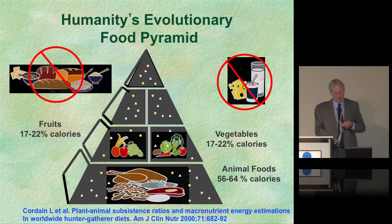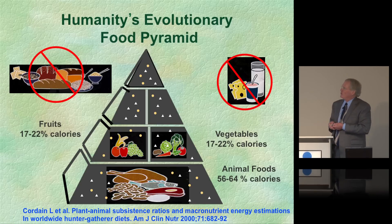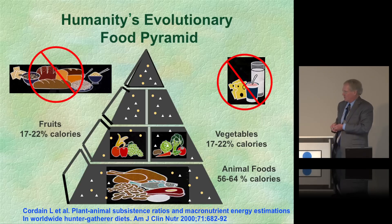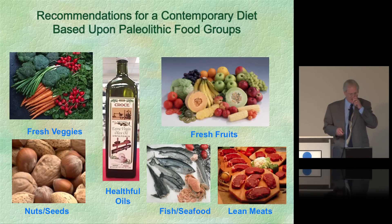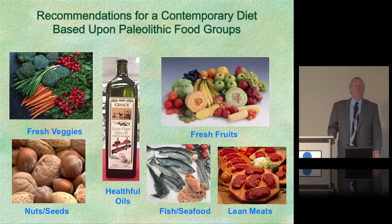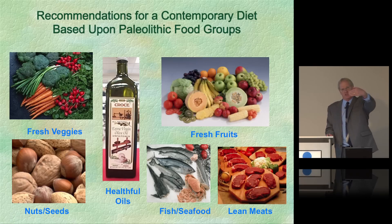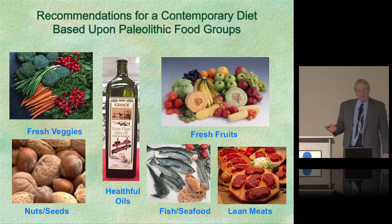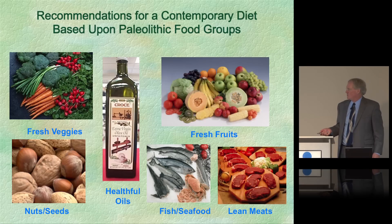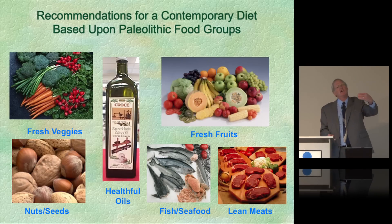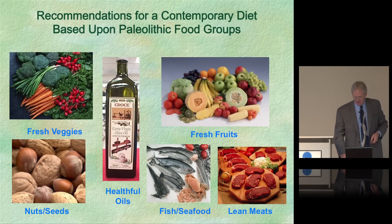I've modified the USDA food pyramid by eliminating grains, dairy, and legumes. For a modern healthy Paleo diet, you're 85% of the way there by shopping in the outside aisles of the supermarket. You can get everything you need from fruits, vegetables, meats, seafood, healthy oils, nuts, and seeds. This diet is much more nutritionally dense. Thank you very much.